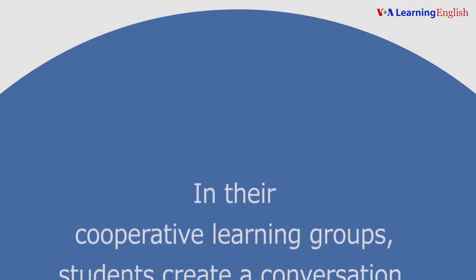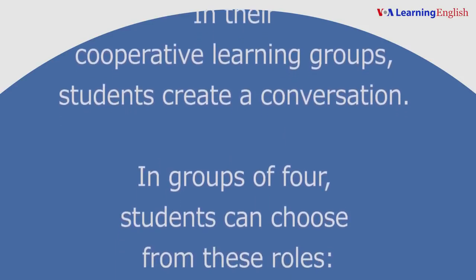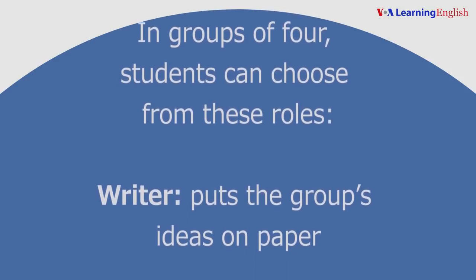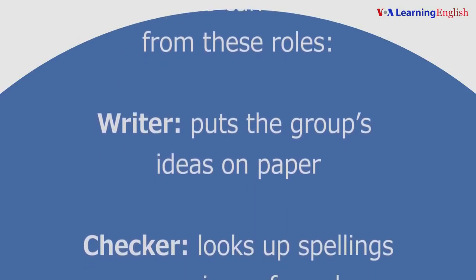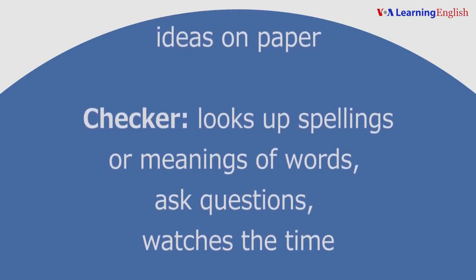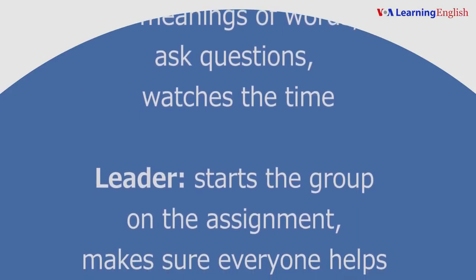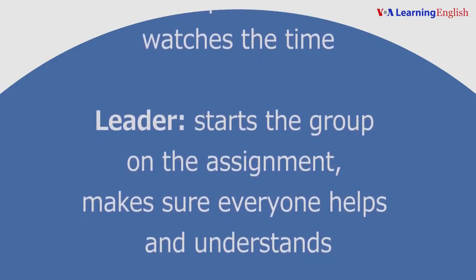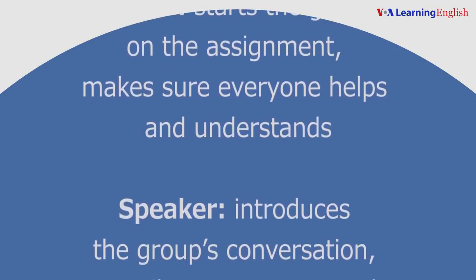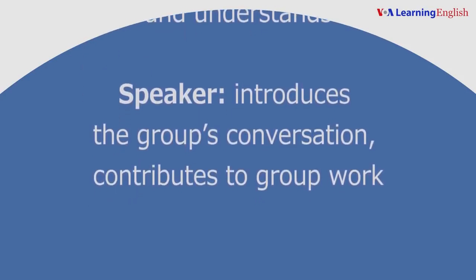In their cooperative learning groups, students create a conversation. In groups of four, students can choose from these roles. The writer puts the group's ideas on paper. The checker looks up spellings or meanings of words, asks questions, and watches the time. The leader starts the group on the assignment and makes sure everyone helps and understands. The speaker introduces the group's conversation and contributes to group work.